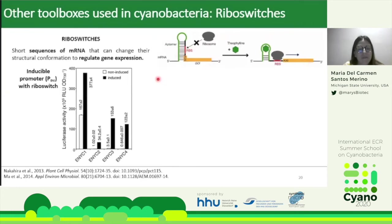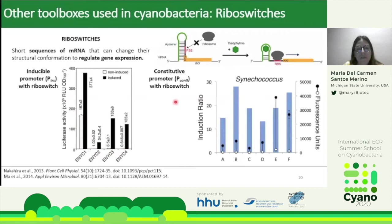This theophylline-dependent riboswitch has been tested with different promoters. With PTRC, a very strong but leaky promoter, the riboswitch reduces leakiness in the absence of inducer and increases the induction ratio after adding inducer. The riboswitch has also been used with constitutive promoters such as Ptrc-ICOM2 in Synechococcus, testing different riboswitch modifications by changing nucleotides. The induction ratios of different versions are good, but the key requirement is having the system truly off when theophylline is absent — some versions still show expression without theophylline.